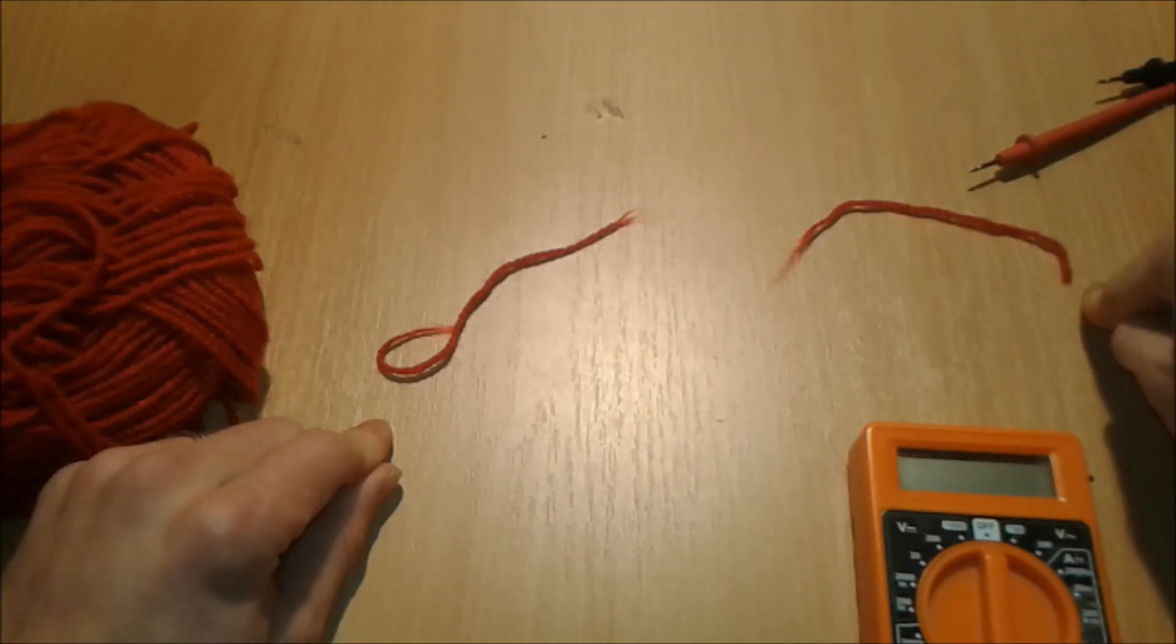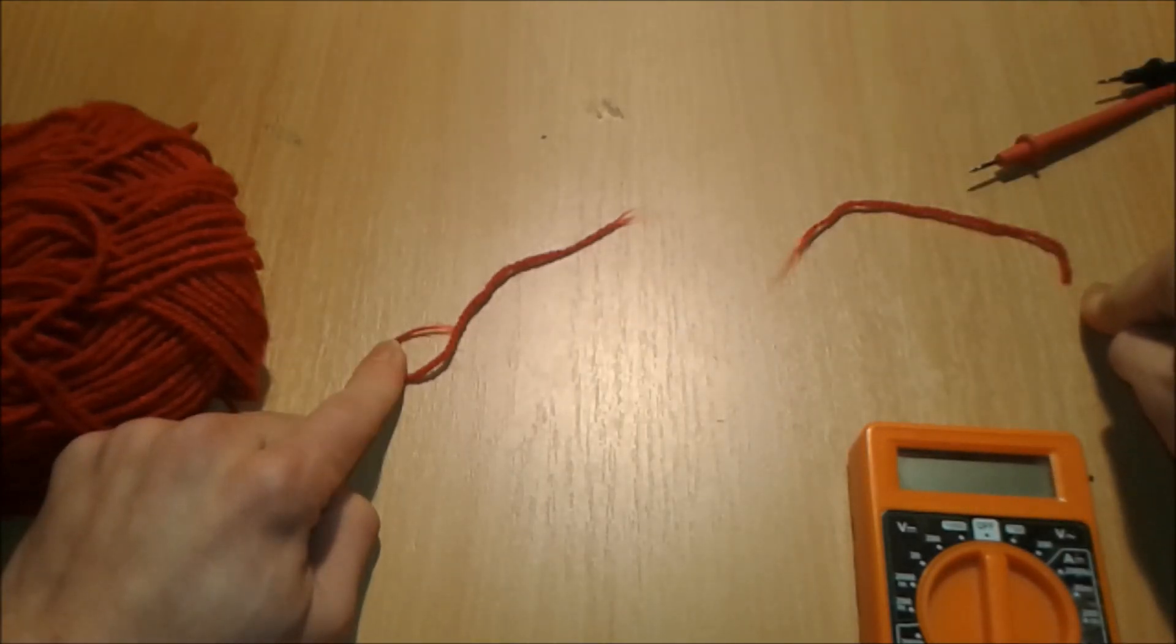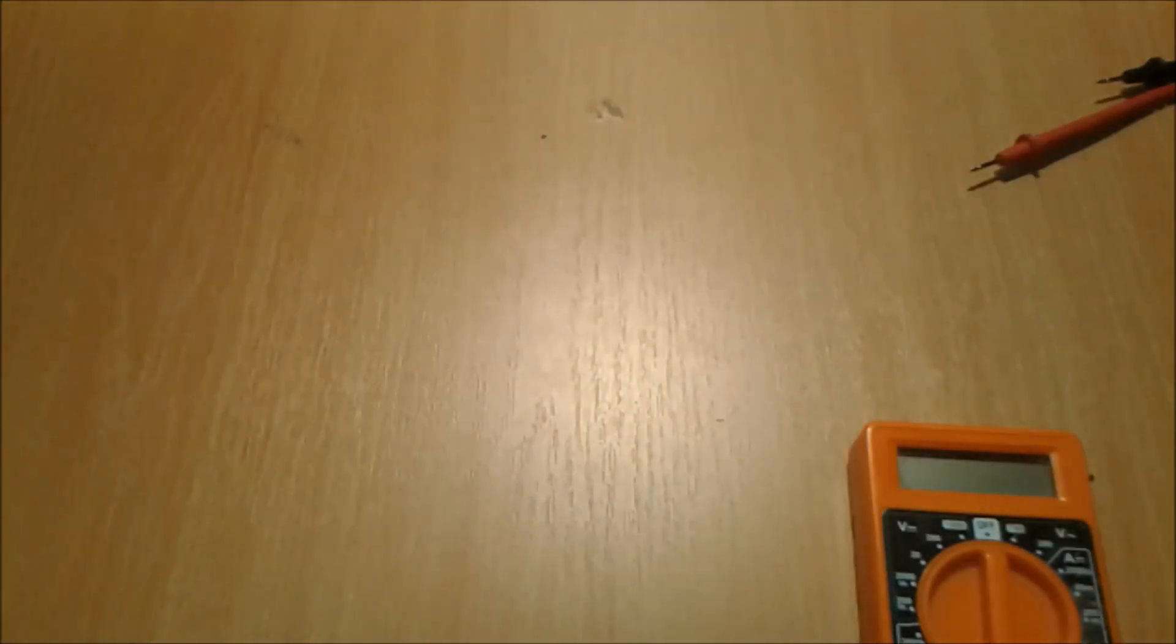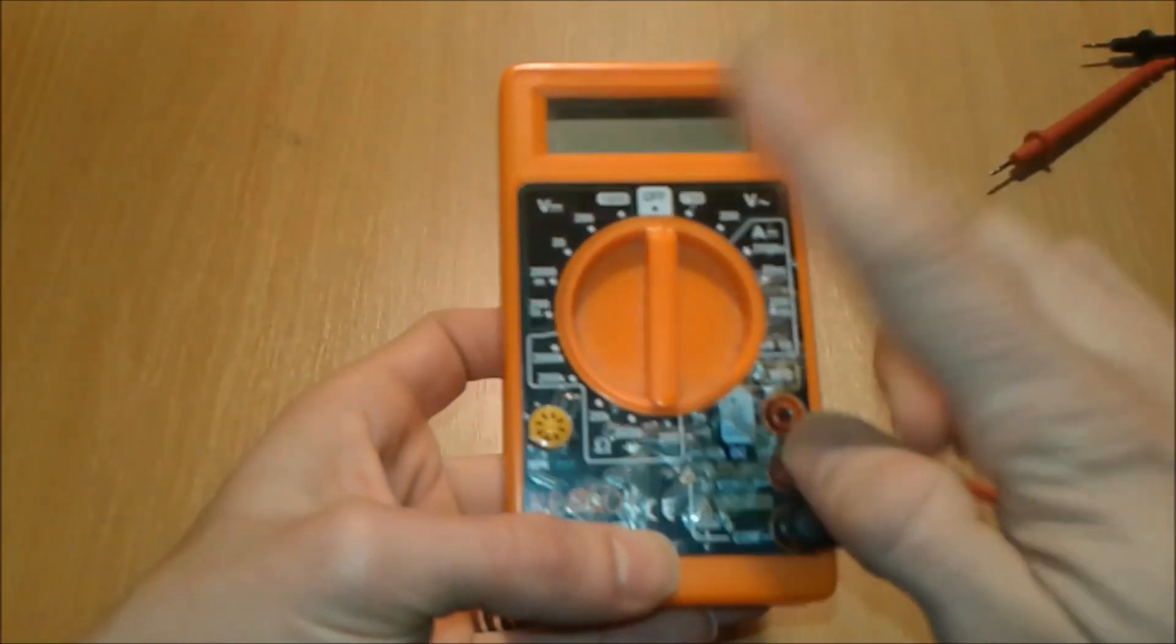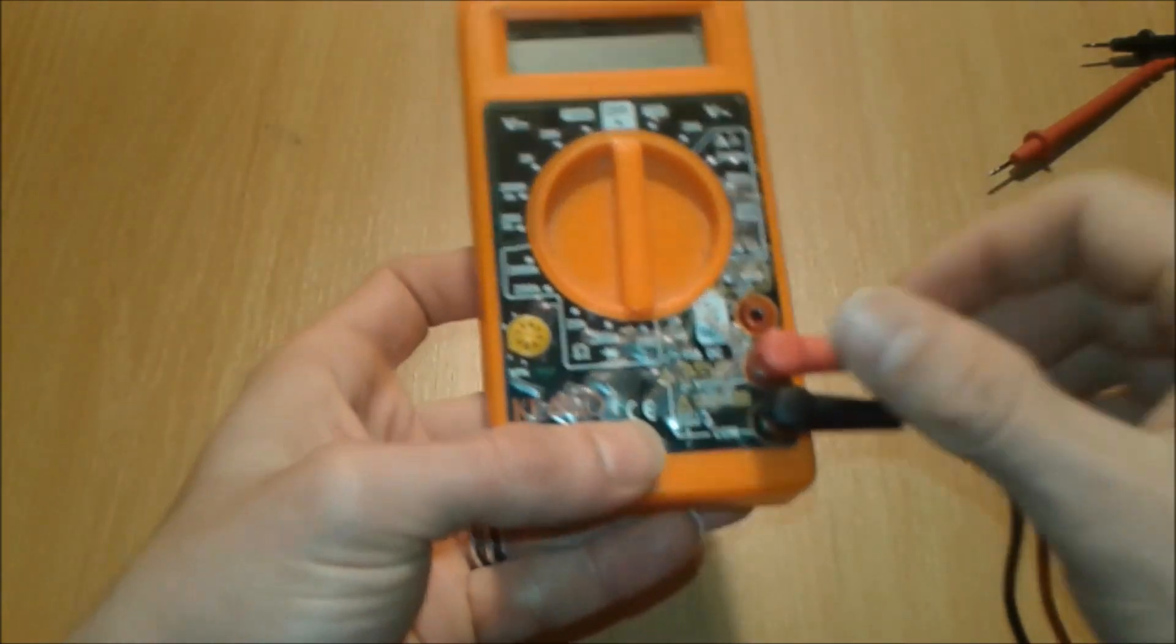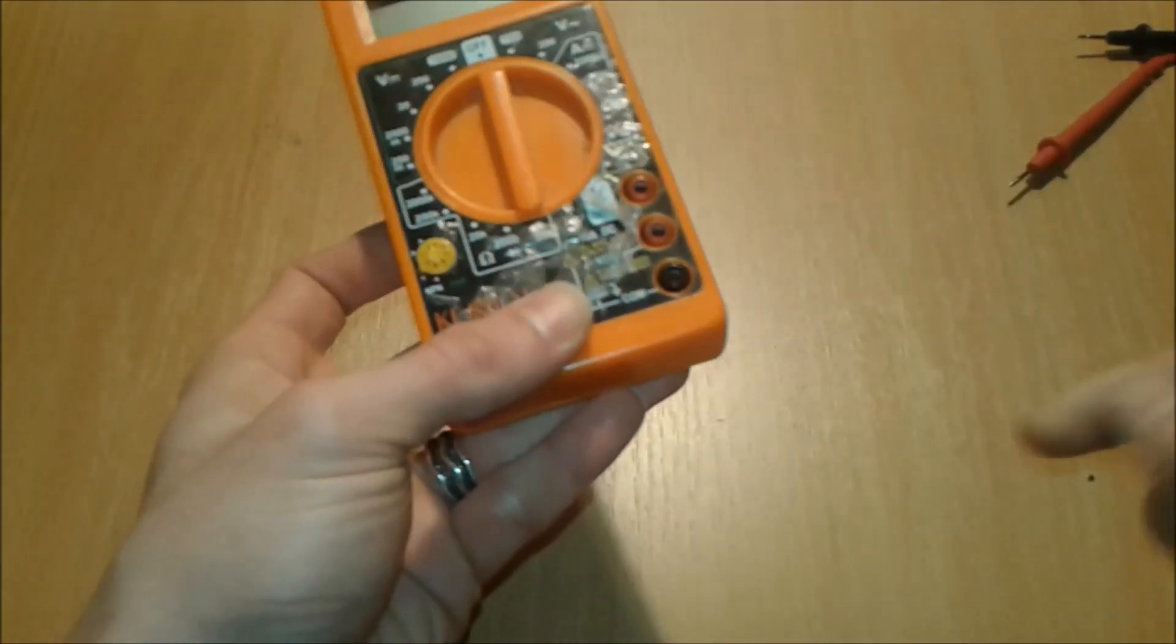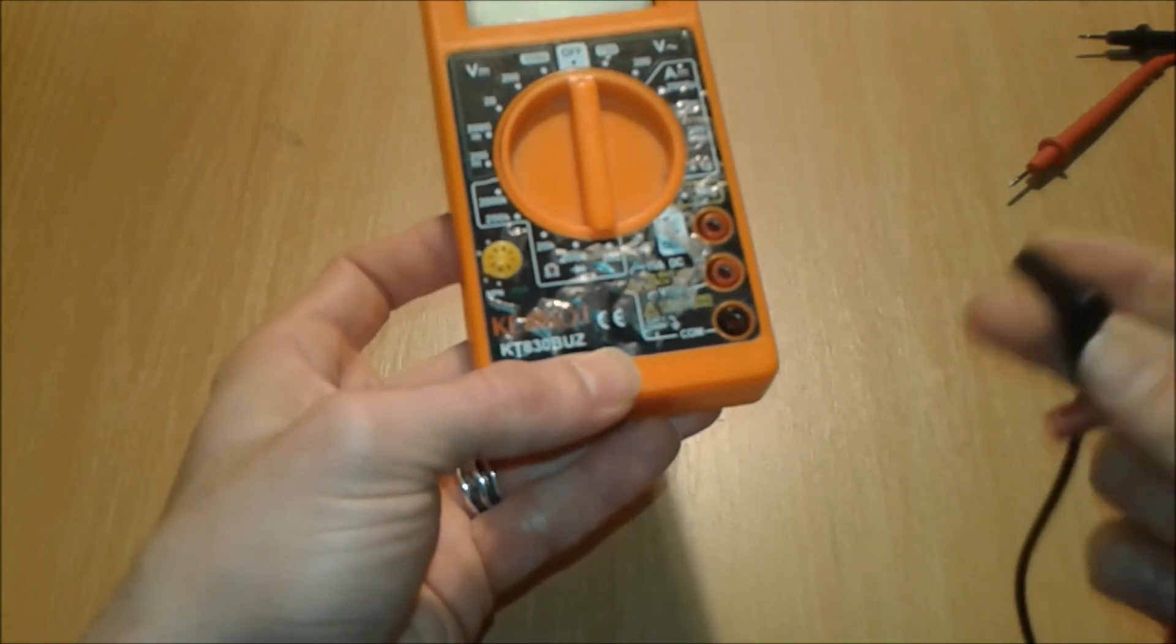First thing first, you have the multimeter. Now it's switched off. You have these two probes. This one, the bottom one, is black.